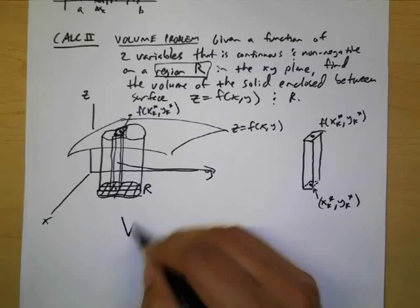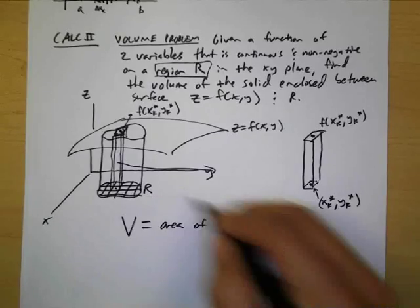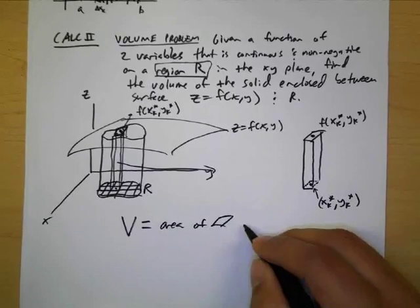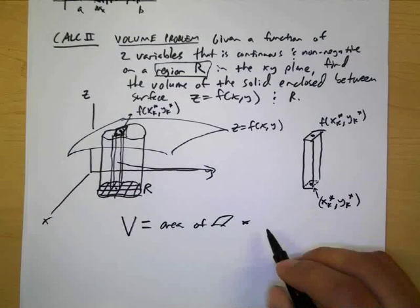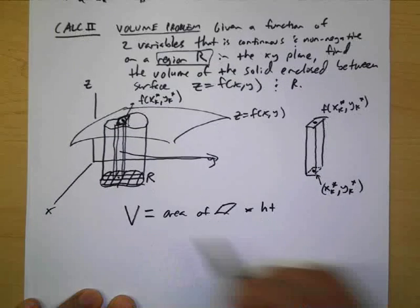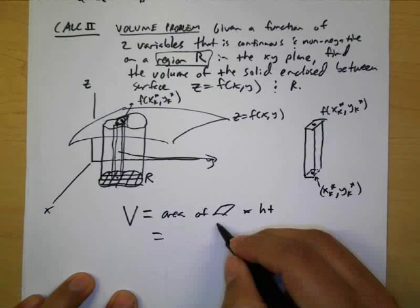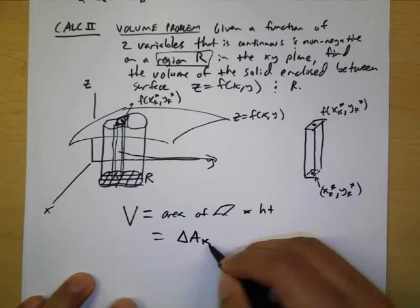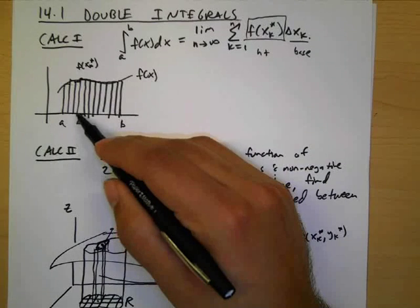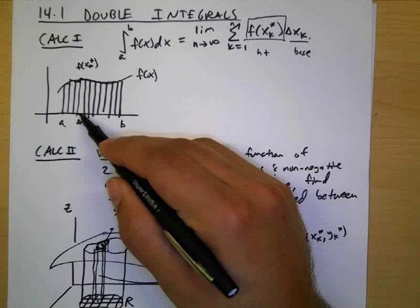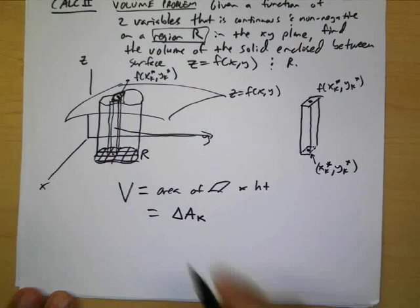So the idea is that we can approximate the volume with several of these and it'll just be the area of one of these parallelograms or rectangles times the height of this parallelepiped. So that's our model for it and what we're going to do is call the area delta a sub k. In calc 1 you had not an area but a width. In calc 2 we have an area that we're shrinking down as much as possible so that's delta a sub k.